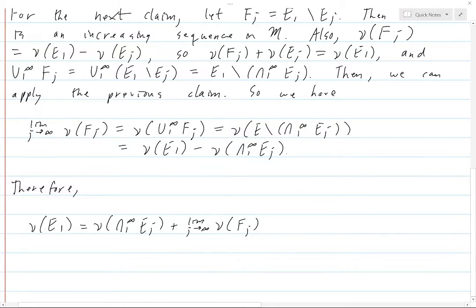And so now that we have this, we can write this as equal to nu of the intersection from 1 to infinity of EJ, plus, and then if we break this part up, we have the limit as j goes to infinity of nu of E1 minus nu of EJ.